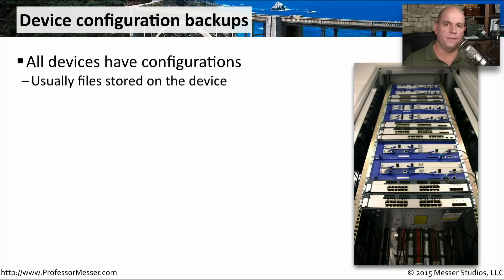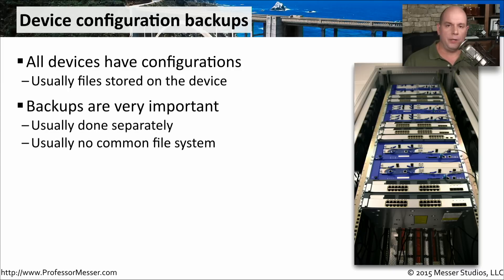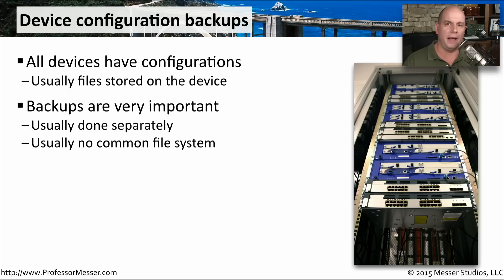The switches, routers, firewalls, and all other devices in your network have configuration files on them. You've made specific configuration settings and they're stored somewhere on those infrastructure devices. Normally, you would make backups of these configuration files — some people do backups once a week, some once a day, and some organizations back up their configuration files every hour for an hourly snapshot of everything that's changed. Unfortunately, all of these devices have completely different file systems and different processes to transfer configuration files off of the device.